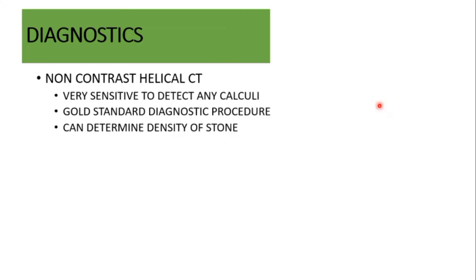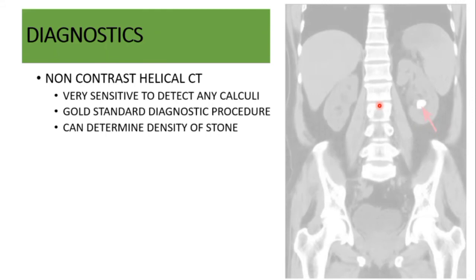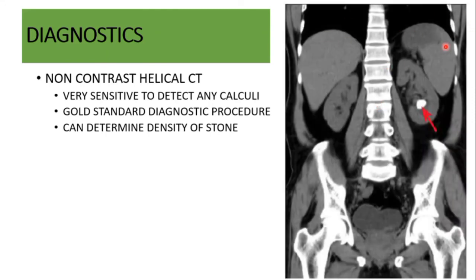The gold standard diagnostic procedure is non-contrast helical CT. It can find any calculi, even uric acid stones not seen on X-ray. It can also determine the Hounsfield units of the stone — that is, the density of the stone. Since cysteine stones are very dense, knowing the density is useful for treatment planning, as some stones can be easily broken while very hard stones are difficult to break.